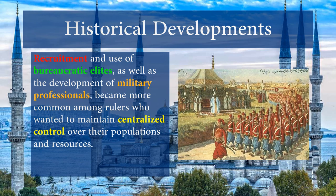The recruitment and use of bureaucratic elites, as well as the development of military professionals, became more common among rulers who wanted to maintain centralized control over their population and resources. Examples include the Devshirme system, the use of janissaries in the Ottoman Empire, salaried samurai in the Tokugawa shogunate, building large standing armies of military professionals, and the expansion of bureaucracy as we see in the Qing dynasty — nothing new with bureaucracy in China.